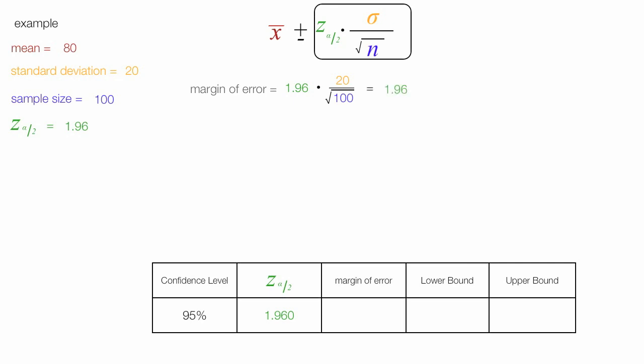This is equal to 1.96 times 20 divided by 10, which is the square root of 100. This is equal to 1.96 times 2, and it's equal to 3.92. This is the margin of error.